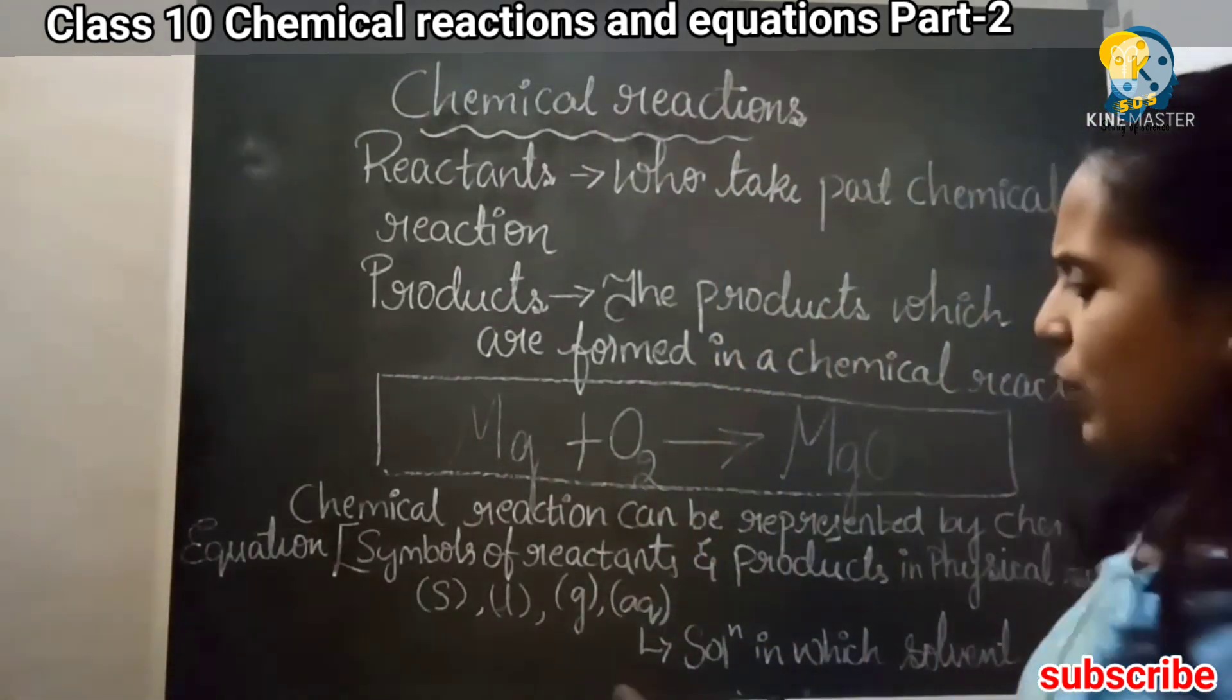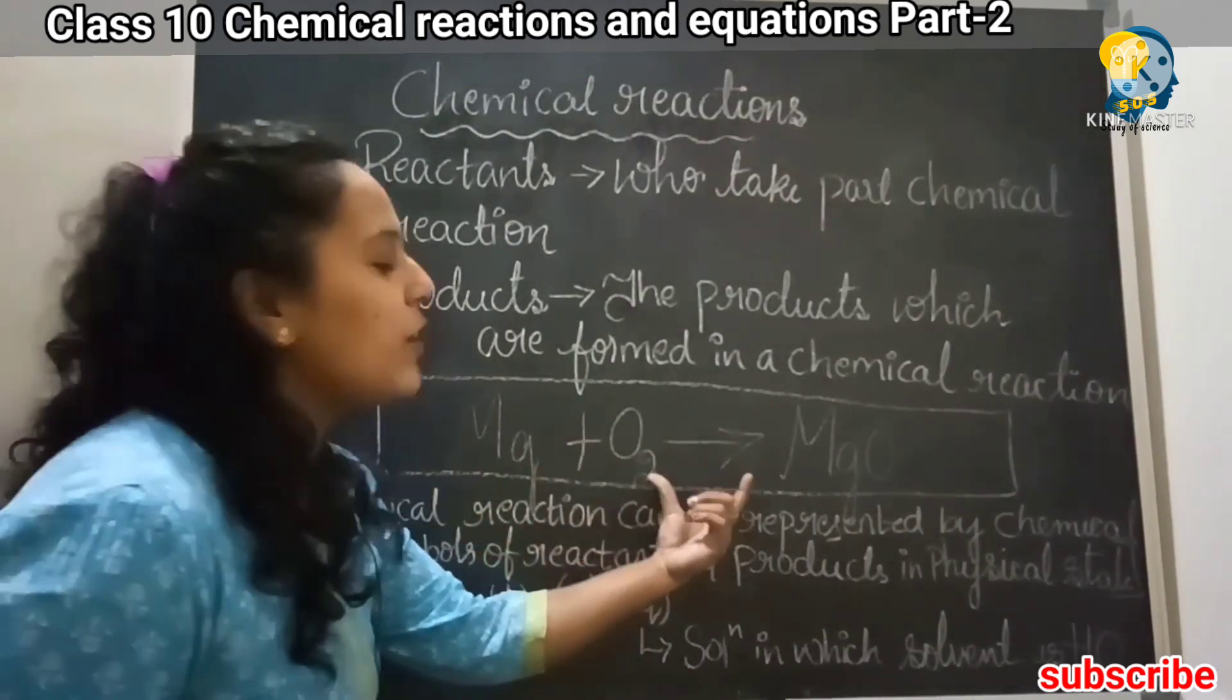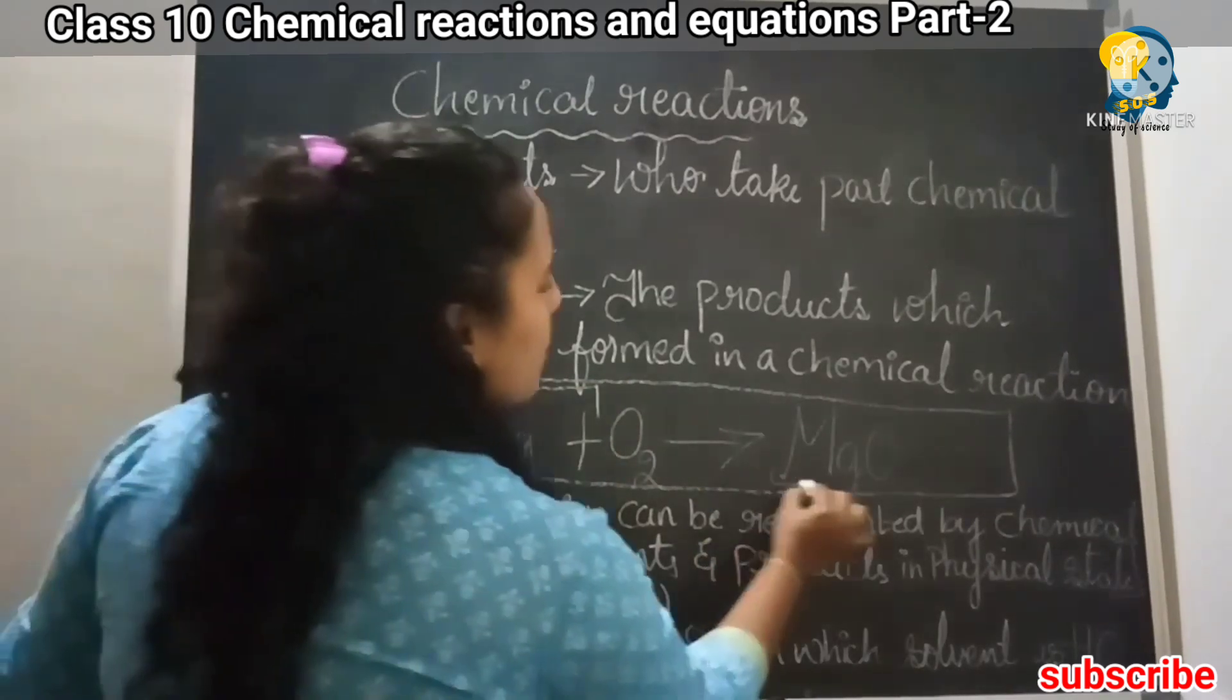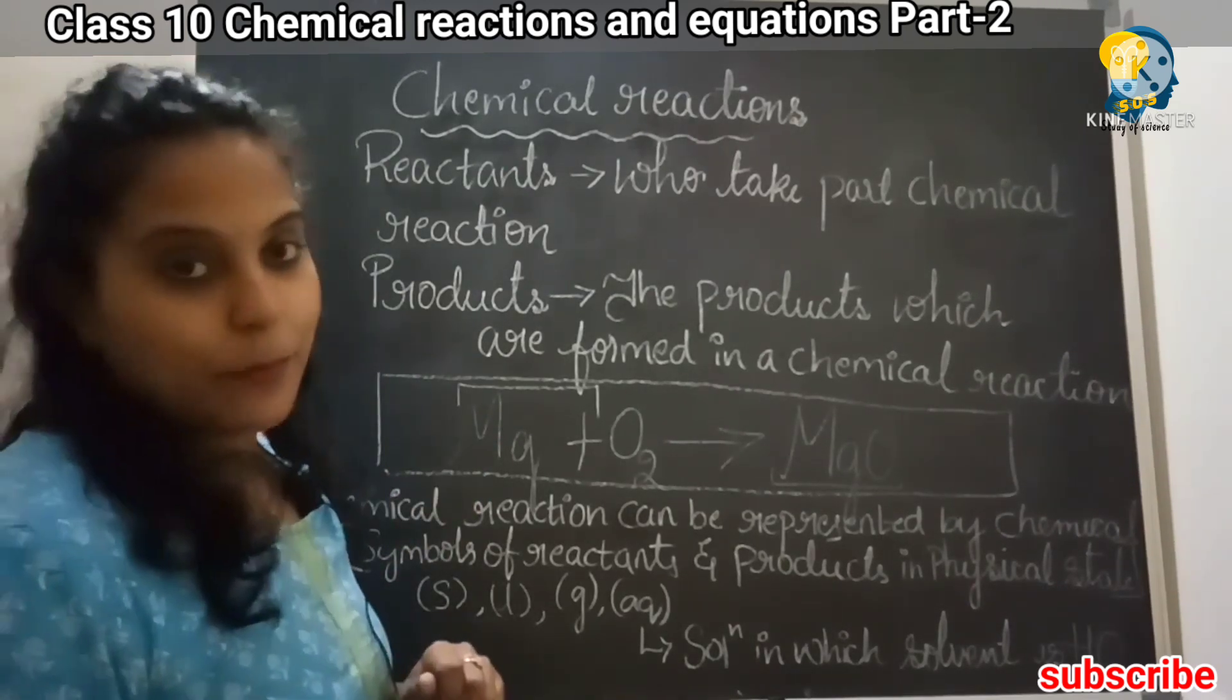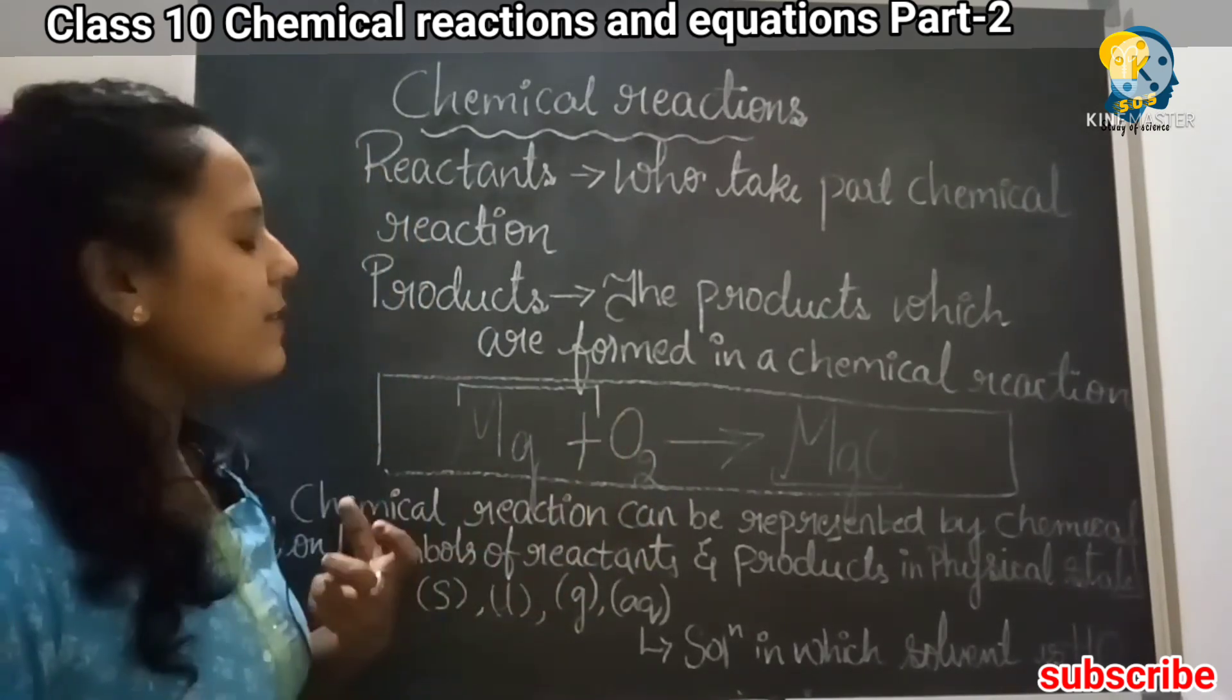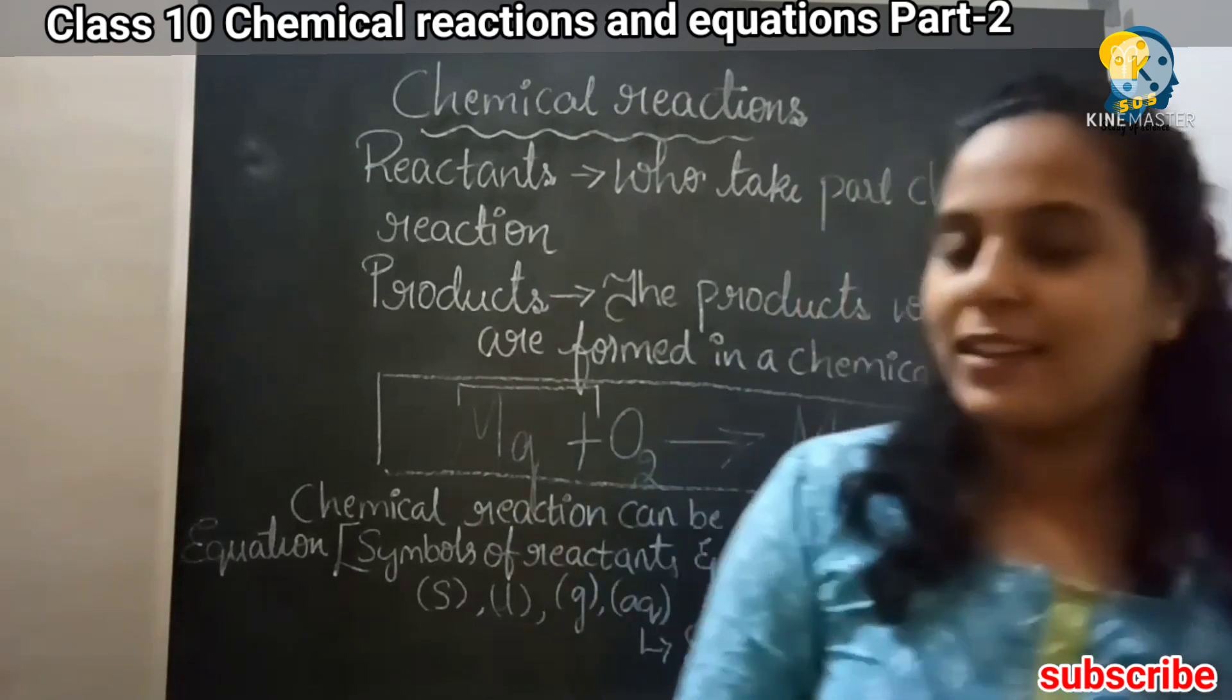Moving to the next step, you can observe the statement. Chemical reaction can be represented by a chemical equation. You can see a chemical equation is here. This chemical equation contains the reactants. These two are called the reactants. And this is our product. Magnesium Oxide is our product. They are represented by symbols. Magnesium is represented by symbol, Oxygen is represented by a symbol, product magnesium oxide is also represented by symbols.